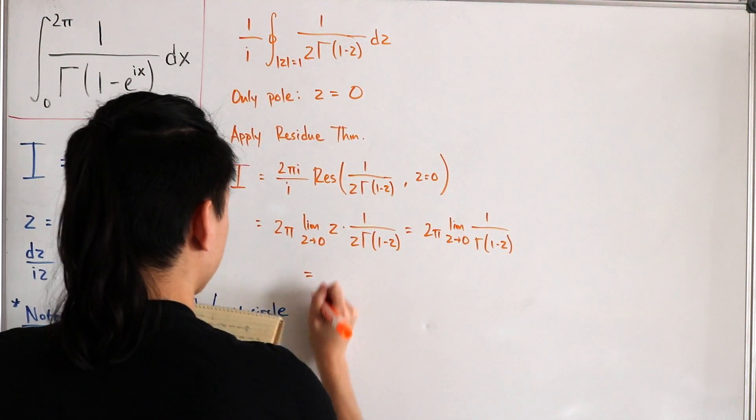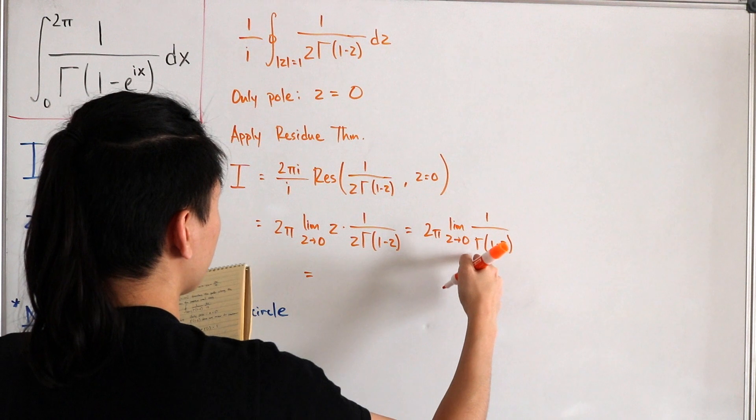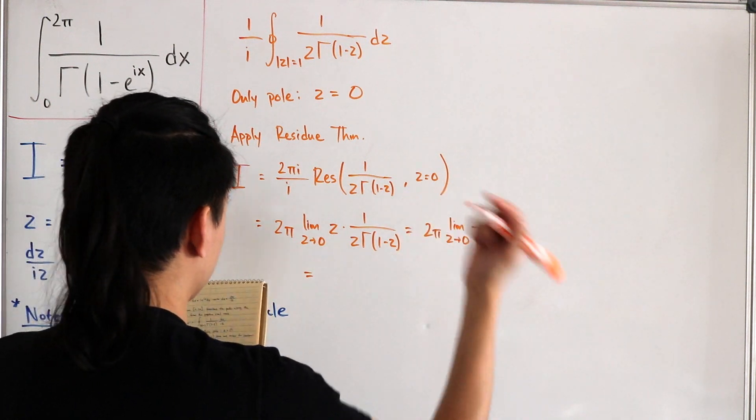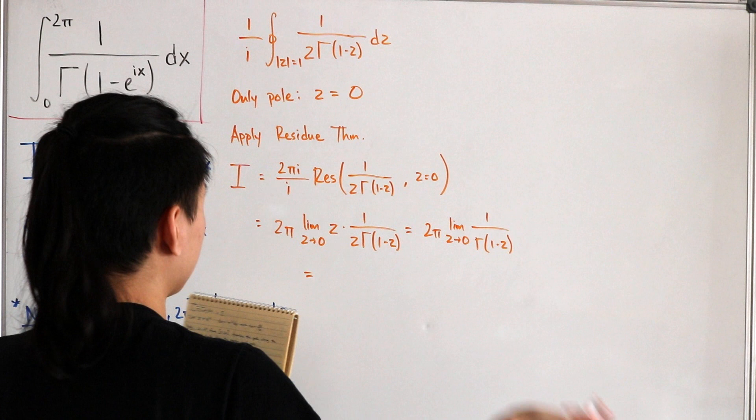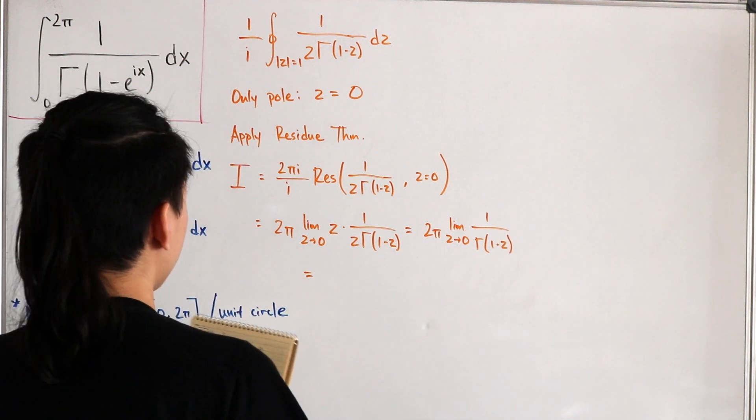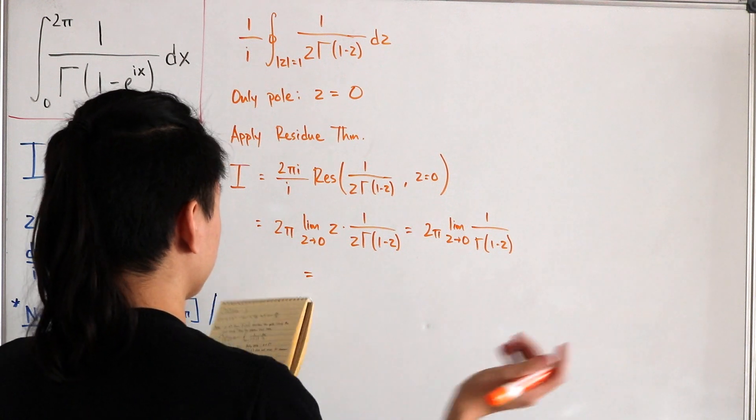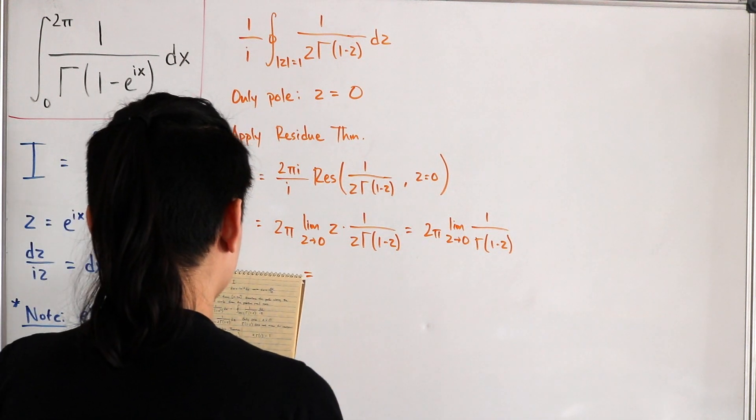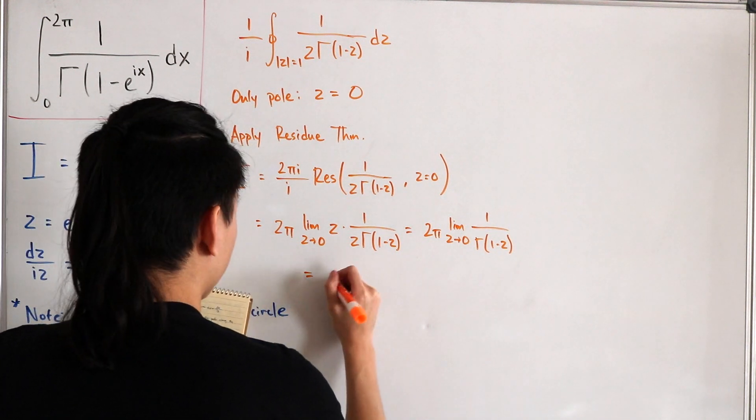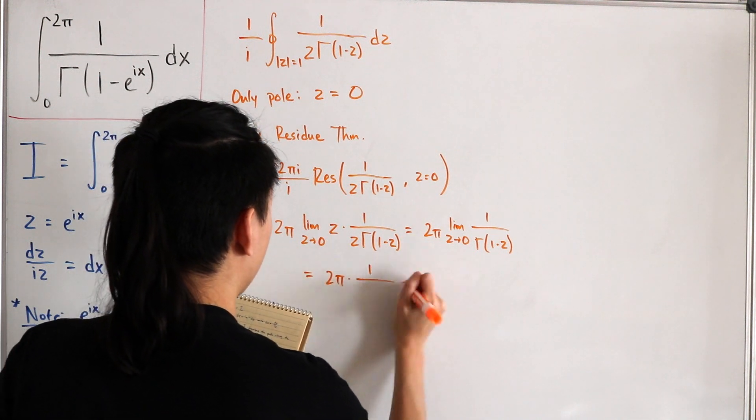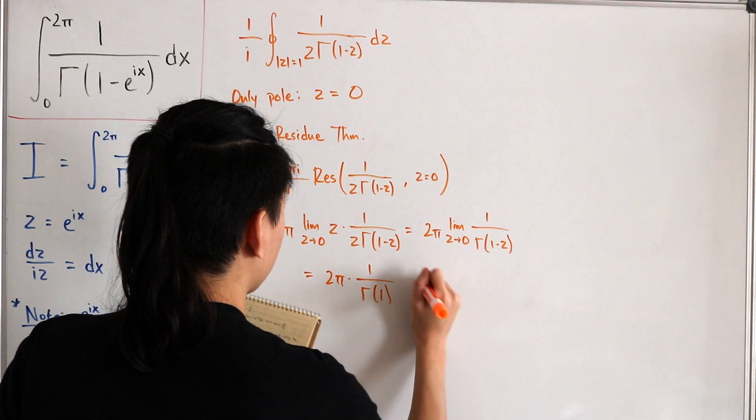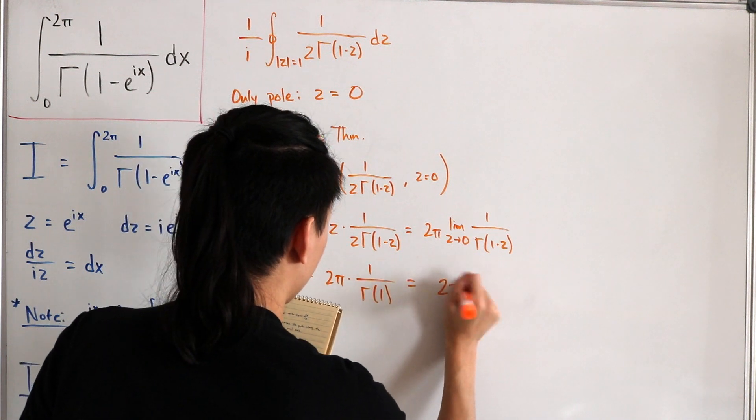And so now it's actually just simple to see that you plug z for here, so gamma of one minus zero is gamma of one, but that's actually well known that gamma of one is just equal to one. You can simply just calculate using the integral representation or however you want to use in forms of gamma. It's very easy to evaluate. So we have 2π then times one divided by gamma of one, which is just equal to just 2π.